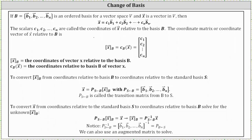If the set B containing the vectors b sub 1 through b sub n is an ordered basis for a vector space V, and vector x is a vector in V, then vector x is equal to some linear combination of the basis vectors b sub 1 through b sub n. The scalars c sub 1 through c sub n are called the coordinates of vector x relative to the basis B.